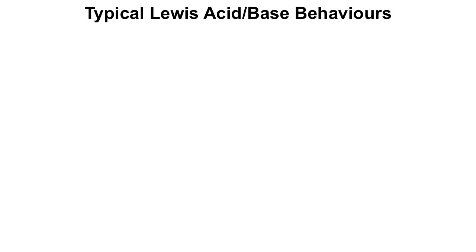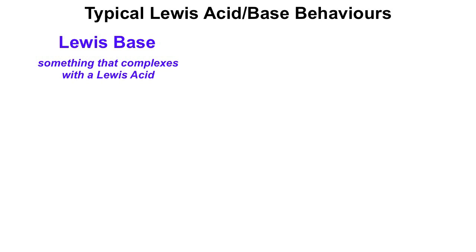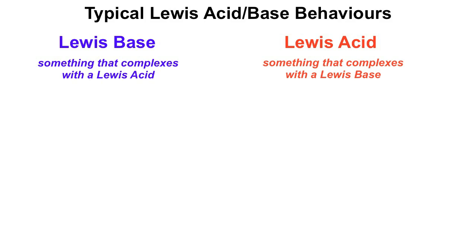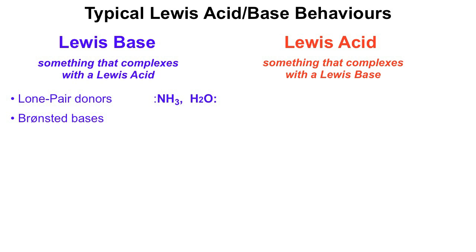Typical Lewis acid-base behaviours. Lewis base behaviour: as a shorthand, a Lewis base is something that complexes with a Lewis acid, and a Lewis acid is something that complexes with a Lewis base. Lewis bases are typically electron-pair donors, such as ammonia and water. They may be Brønsted bases — proton-abstracting bases — for example, a hydroxide ion or a carbanion. Lewis bases also behave as nucleophiles, for example, thio-anions.